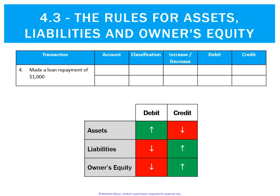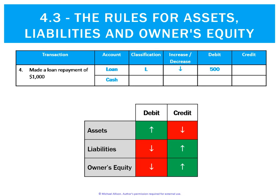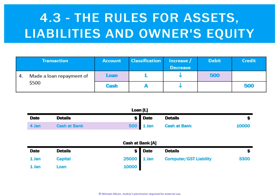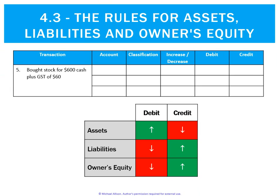Next transaction: made a loan repayment of $4,000. The loan is a liability decreasing — when a liability decreases that's a debit. Cash is an asset decreasing — assets decrease on the credit side. Posting to the ledgers: debit to loan and credit to cash at bank. The reference in the loan ledger is 'cash at bank', and in the cash at bank ledger the reference is 'loan'.